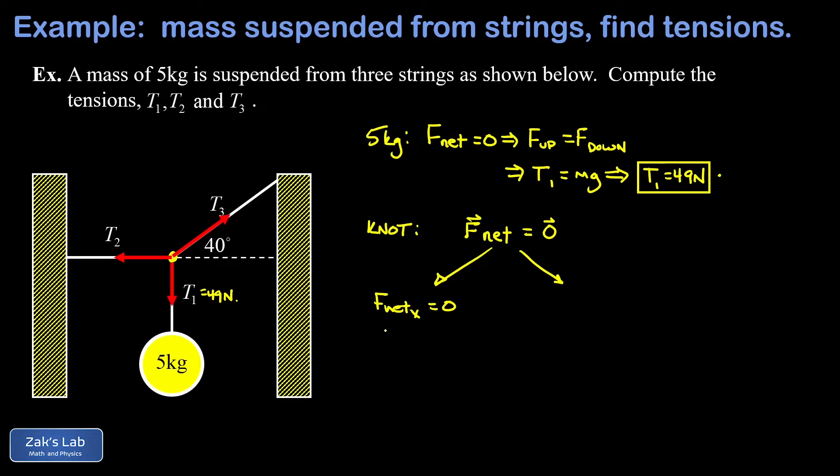That means T2, which entirely points to the left, has got to be equal to the x component of T3 pointing to the right. Well that x component is just T3 times the cosine of 40 degrees.